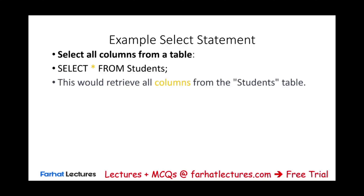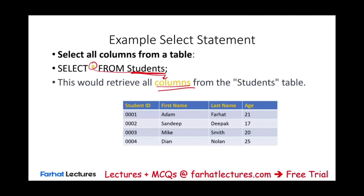Let's start by looking at the SELECT clause. If we write SELECT * FROM STUDENT, the star refers to all columns, and this retrieves the entire student table. For example, if the student table has four records with student IDs 001, 002, 003, and columns for first name, last name, and age, SELECT * FROM student retrieves the whole table.